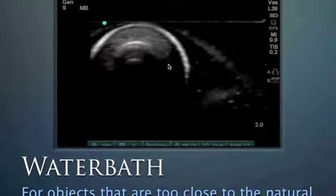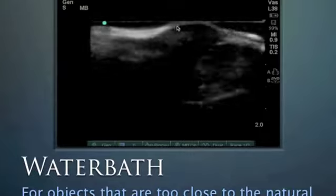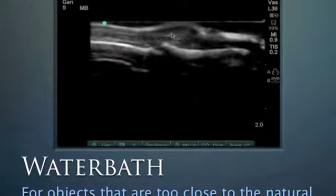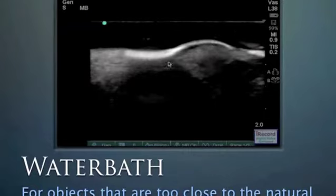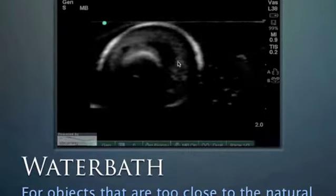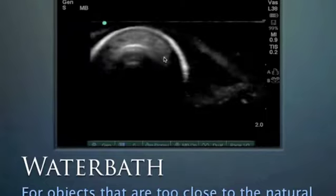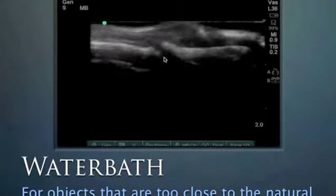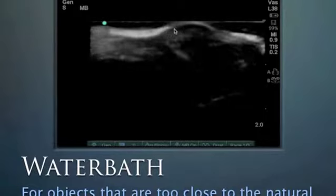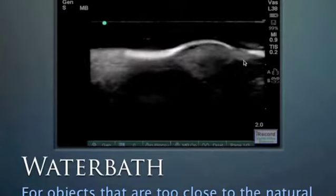Another digit with a paronychia — on the other aspect of the finger. In the water bath we can make out the paronychial area. Here it is in the short axis: a hypoechoic area. Moving into the long axis, we can see this area extending just right up to the nail. There's the nail bed, and then the paronychia adjacent to it.